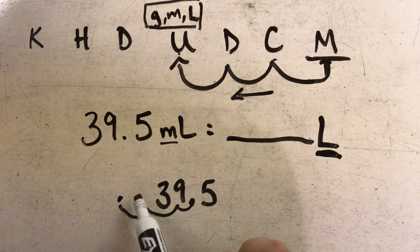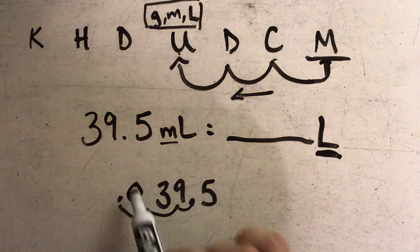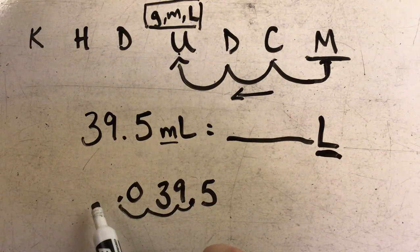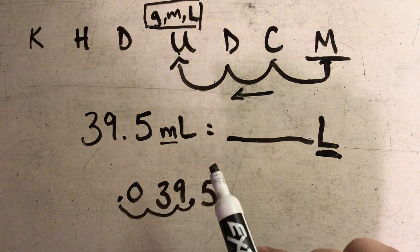Again, I need to annex a zero since I have a blank space, and I also want to annex a zero to the left because I want to have a place for my ones place. So I would end up with zero point zero three nine five liters.